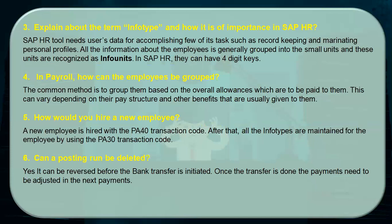The fifth question is how would you hire a new employee. Whenever a new employee is hired or maintained, there are two transaction codes associated: PA40 for hiring a new employee, and PA30 for when you want to maintain an infotype for an employee.